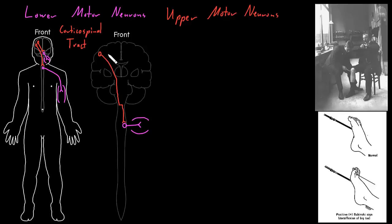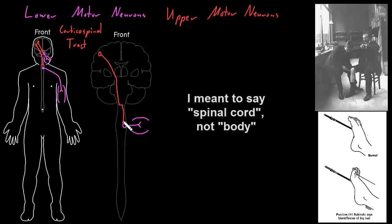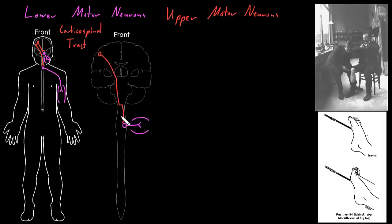Because most of the axons of the corticospinal tract travel down one side of the brain and then cross over to travel down the other side of the body, dysfunction of these axons on one side of the spinal cord usually causes weakness of muscles on that same side. But dysfunction of the corticospinal tract on the other side — up in the cerebral hemisphere or in the brain stem — usually causes weakness on the opposite side of the body. So the right side of the brain controls the left side of the body in terms of controlling skeletal muscles, for the most part.